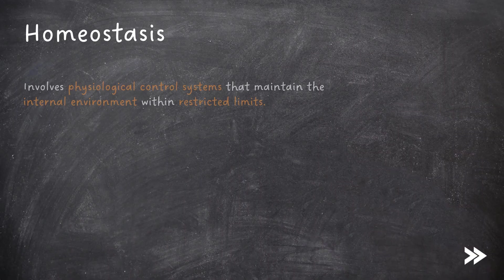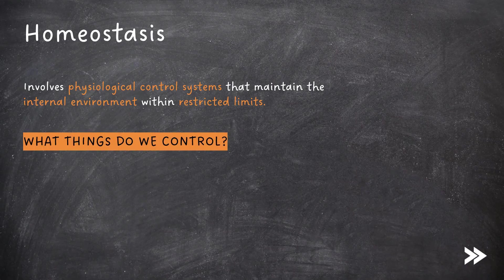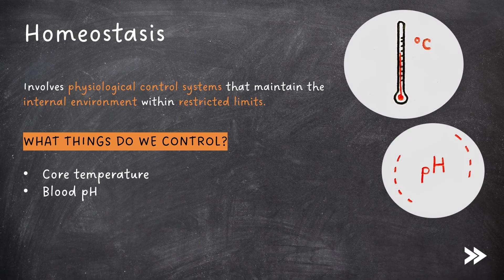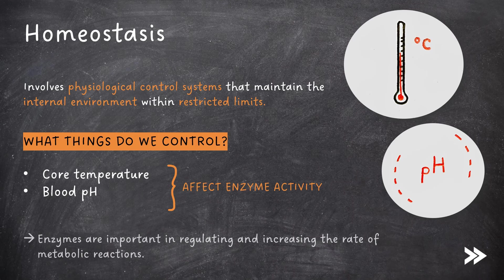So let's make a start by defining homeostasis. Homeostasis involves physiological control systems that maintain the internal environment within restricted limits. So what things do we control? We need to control things such as core temperature and blood pH because these are factors that affect enzyme activity. Why are enzymes important? Well, enzymes are important in regulating and increasing the rate of metabolic reactions.